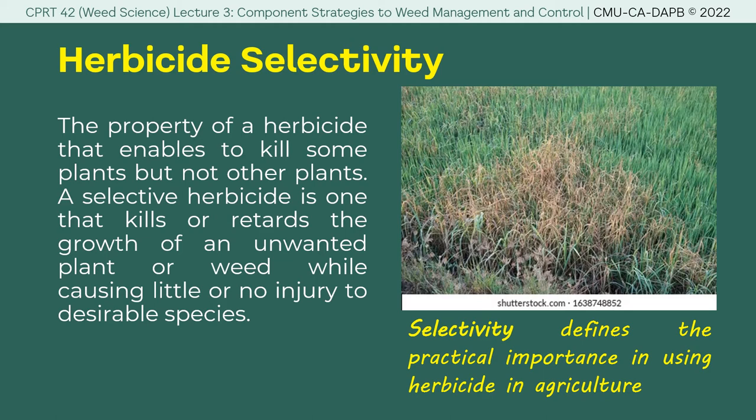Herbicide selectivity is an important property of an herbicide that enables it to kill some plants but not others. A selective herbicide kills or retards the growth of an unwanted plant or weed while causing little or no injury to desirable species. However, selectivity is effective only up to certain concentrations, and the chemical itself is only effective for a group of weeds. True selectivity happens only when there is an interaction between the plant and the herbicide, which defines the practical importance of using herbicide in agriculture.